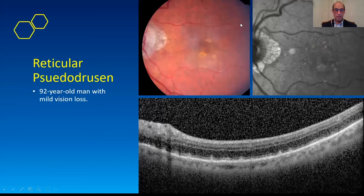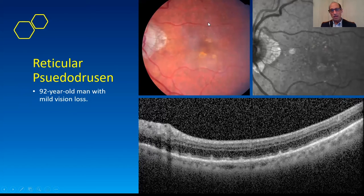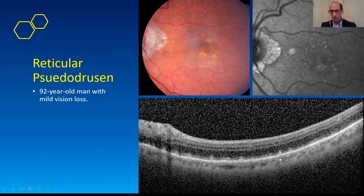Reticular pseudodrusen are totally different. Some people call them subretinal drusenoid deposits — they're not drusen, they're pseudodrusen. There are these funny-looking spots, not in the center. You see them better on the infrared image — little dark spots on the infrared, tending to be up here or sometimes down here. On the OCT, they're actually in front of the RPE, which is distinct. Here's your RPE line, and then here are the little reticular pseudodrusen.